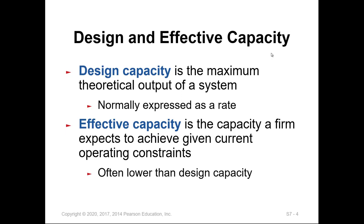We design capacity to be the maximum theoretical output of a system expressed as a rate. But most of the time, the maximum capacity cannot even be reached. The company must define and measure their own capacity. The effective capacity is the capacity a firm expects to achieve given current operating constraints, which is often lower than the design capacity. So if the design capacity for a machine is 1,000 units per hour, the effective capacity will most likely be less than that, because many factors prevent achieving maximum capacity.